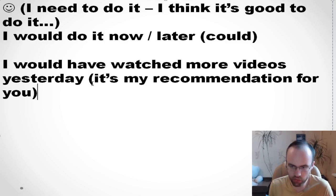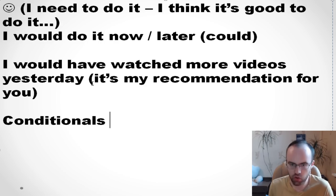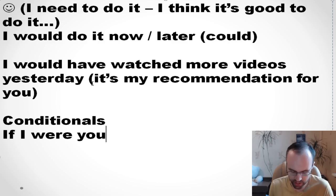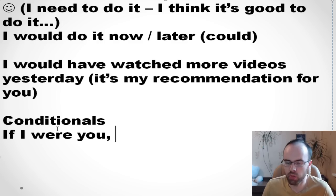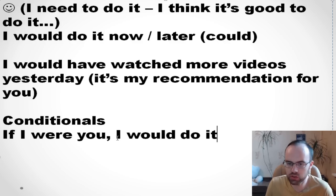We often use this structure with conditionals. For example, 'If I were you, I would do it.' Note: normally we say 'I was,' but in conditionals we say 'I were.' 'If I were you, I would do it' — it means it's a good idea for you to do it. This is about the present, and we call it the second conditional.